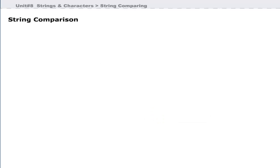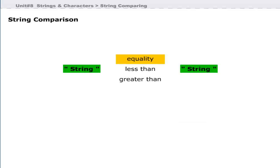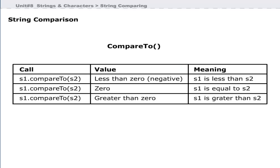In addition to comparing strings for equality, sometimes it is necessary to see whether a string is less than or greater than another string. The String class defines the compareTo method for this purpose. This method compares two strings and returns an integer value. This table shows the interpretation of the value returned by the compareTo method.